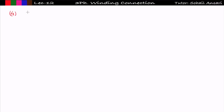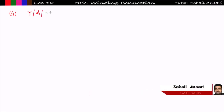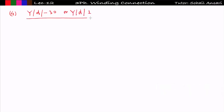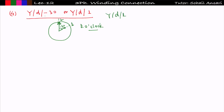The first point is how to make a YD-30, which can also be called YD1. In this winding connection, the primary is star connected and secondary is delta connected — that is a low voltage winding. The line-to-neutral voltage of the low voltage winding phasor is lagging behind by 30 degrees. In clock notation, at 12 the high voltage is fixed and the low voltage side lags by 30 degrees, making it one o'clock — that's why it is known as YD1.